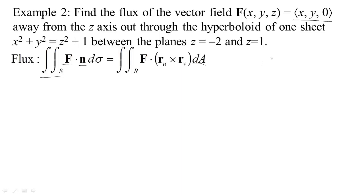Now we have to be a little bit careful. We have this hyperboloid between z equals negative 2 and z equals 1, so it looks a little bit like this. And there are two normals here to the surface: a normal that points out away from the z axis and a normal that points in towards the z axis. So we have to make sure that this goes in the correct direction.